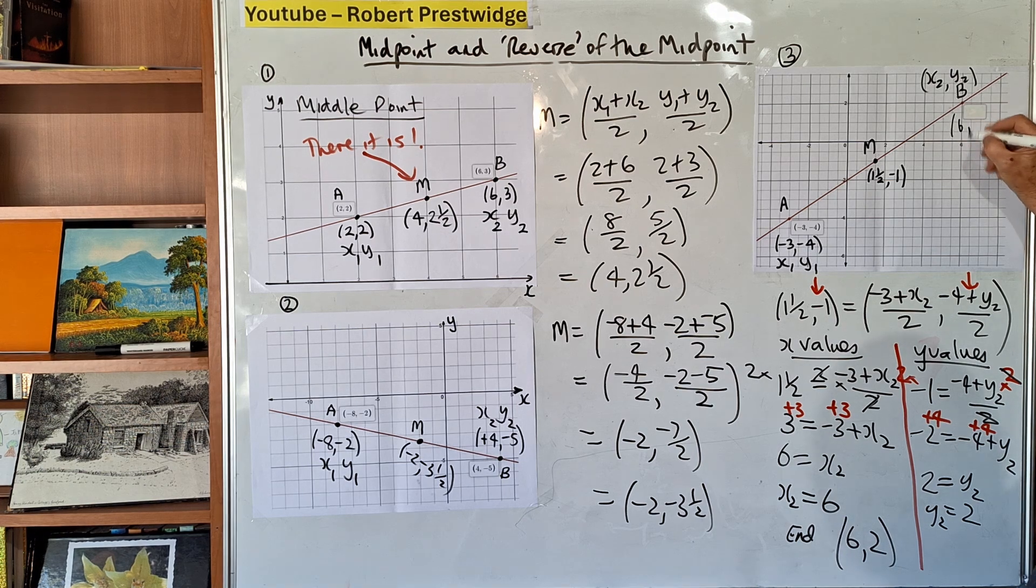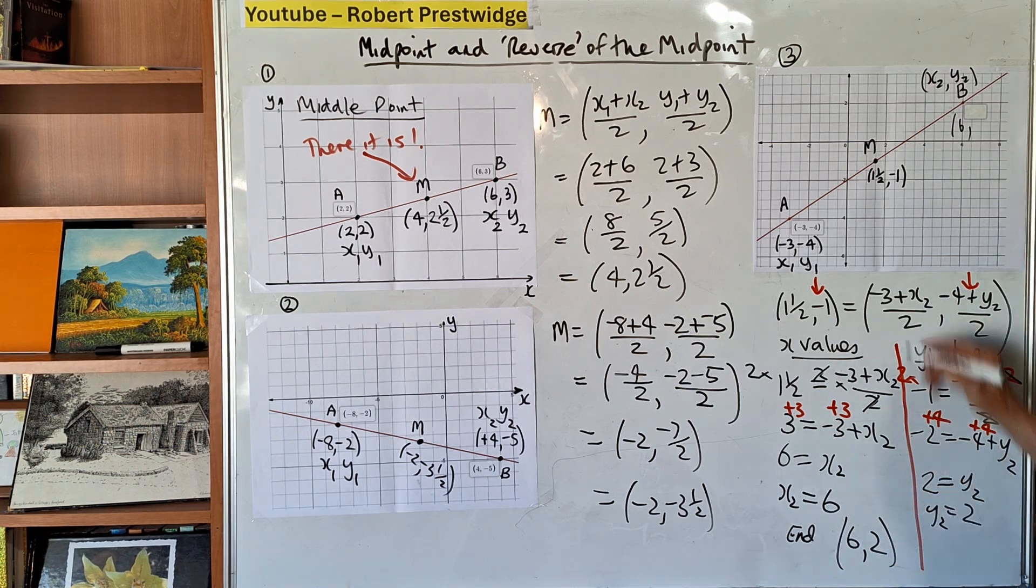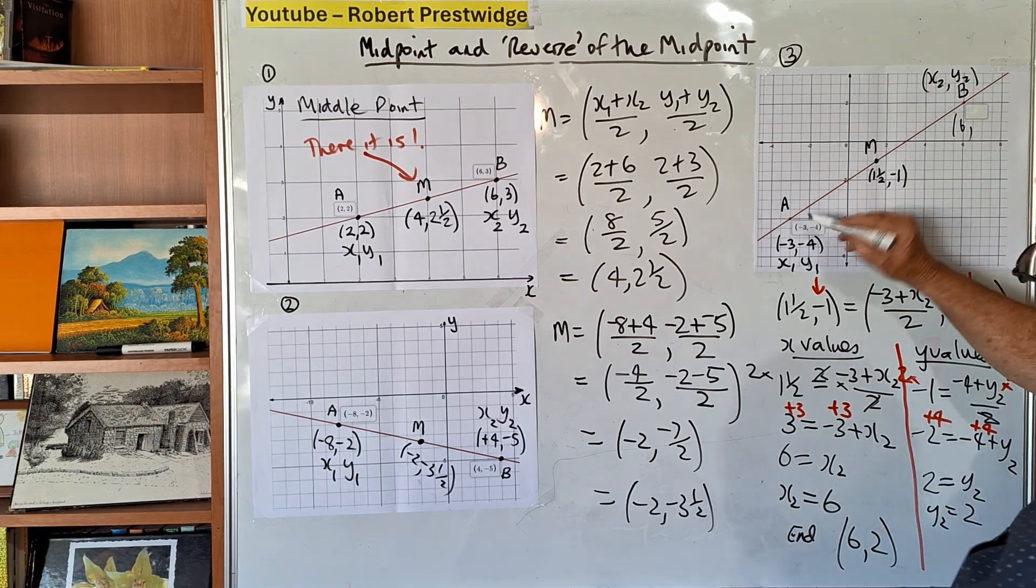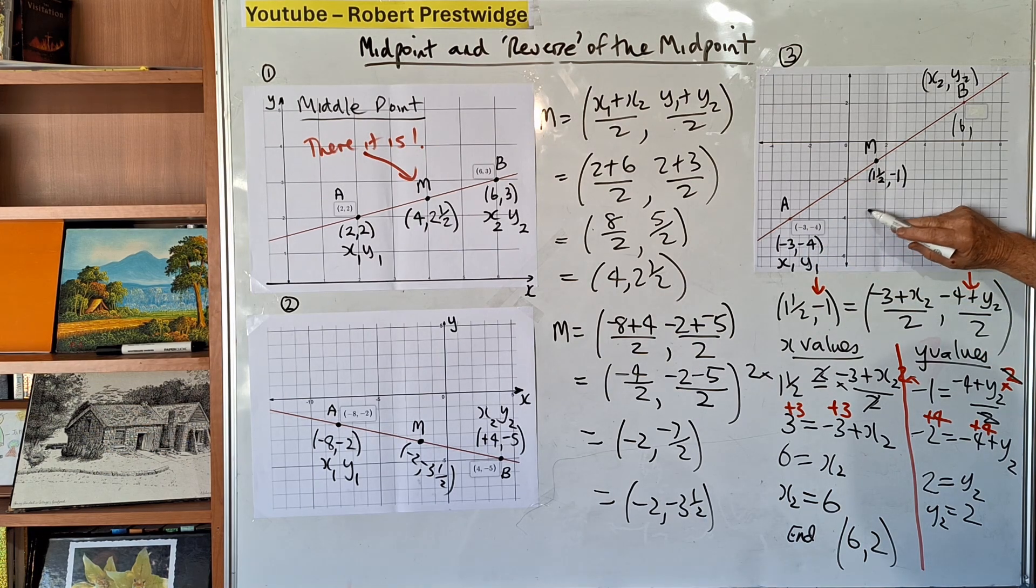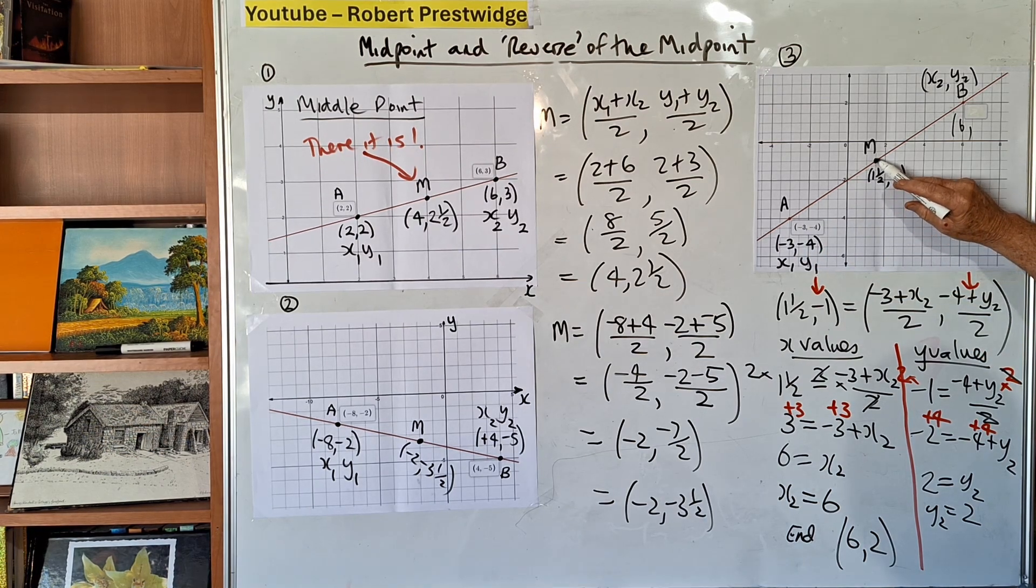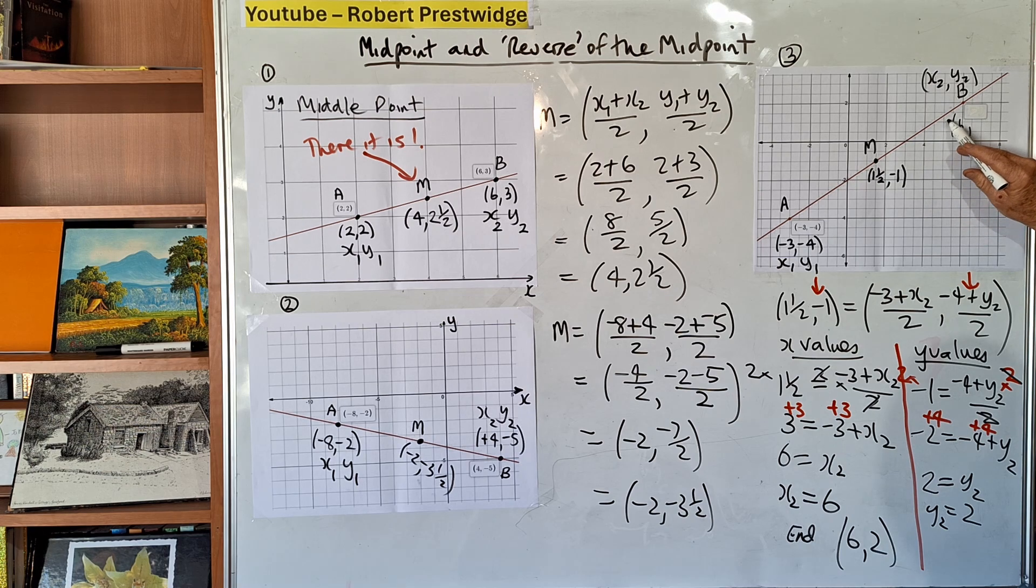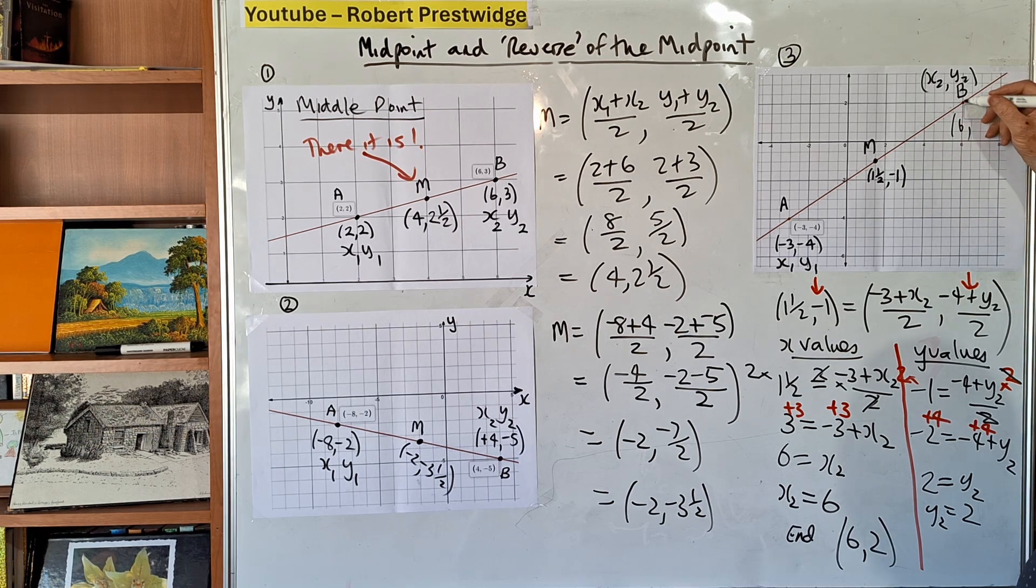Then count up from there: 1, 2, 3, 4, 5, 6. And I end up at the value of 2. So that's the reverse of the midpoint - finding the endpoint.